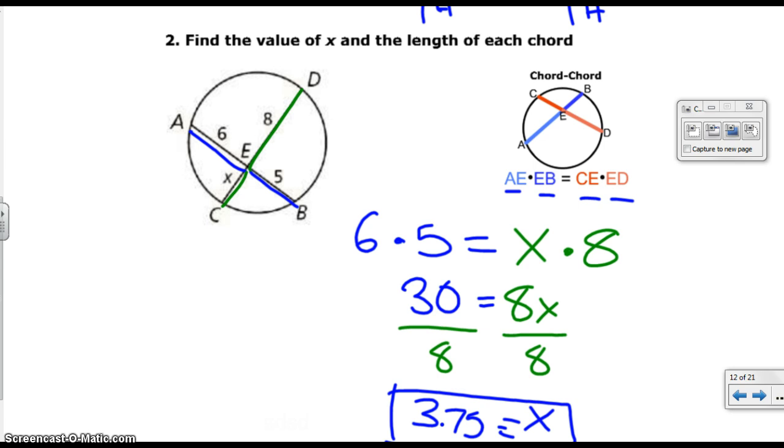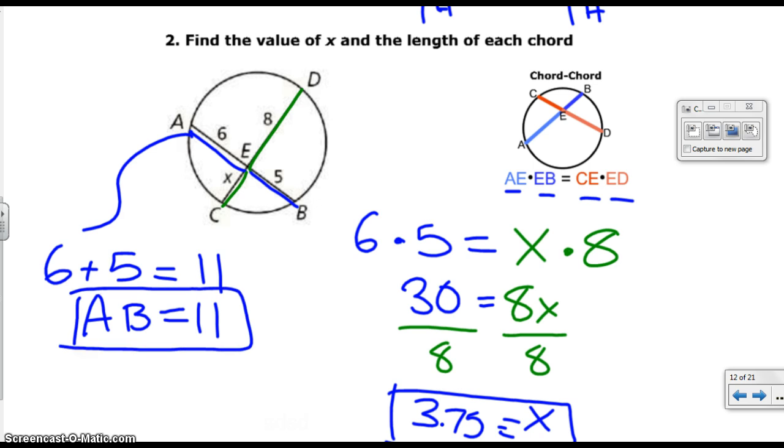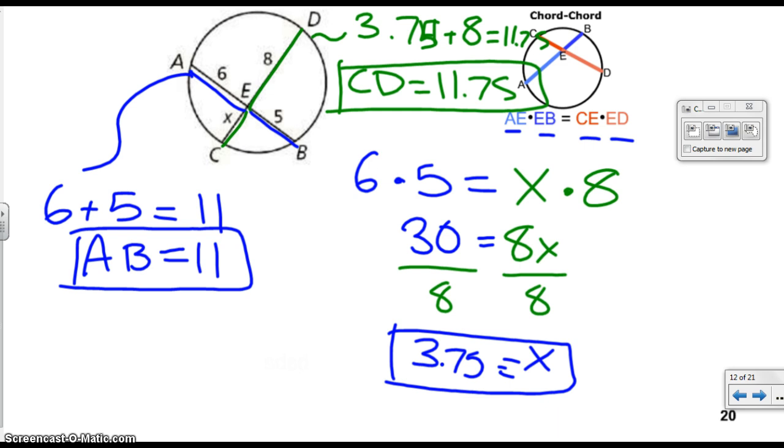And now we have to find the length of each chord. Same idea. So we use AE plus EB, which is 6 plus 5, gives us 11. That's the length of the whole chord, AB. And then for the second one, we do CE, which is x, but we know that actually equals 3.75 plus ED, which is 8, and we will get 11.75. Siegel made a mistake, rolled 0.75 on that one. We'll let him slide though. He caught himself. It's good. So that's the length of CD. Remember, if you get decimals, fractions, it's okay. Don't panic.